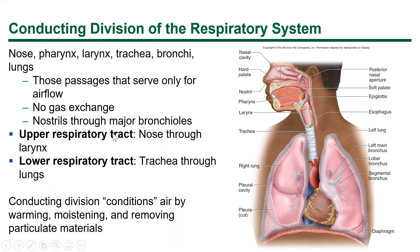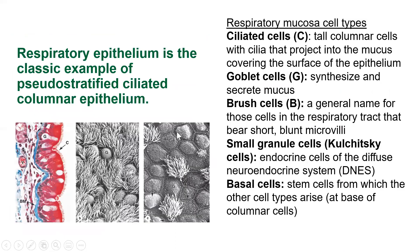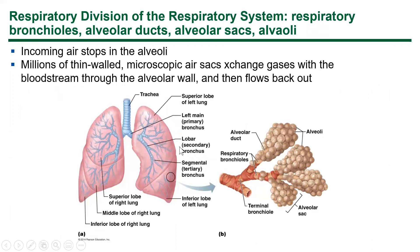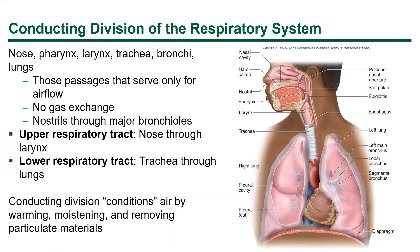The upper respiratory tract is clinically relevant because this is how conditions are often medically described. The upper respiratory tract is your nose through your larynx — spaces where air is moving through before the trachea. The lower respiratory tract is trachea through lungs. If you have a nasal blockage, like a deviated septum, a humidifier can save you a lot of pain in the morning.